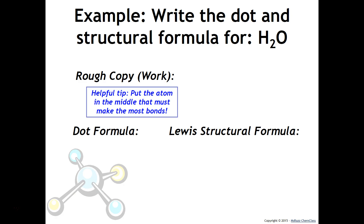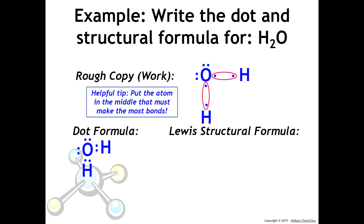This is water. A helpful tip: whenever you have three atoms of two different types, put the atom in the middle that wants to make the most bonds. Oxygen only needs to make two bonds and hydrogen needs to make one each, so oxygen goes in the middle with each hydrogen positioned around it. Oxygen makes two bonds — one to each hydrogen. The dot formula and structural formula both show this, with the only difference being that the dot formula uses two dots while the structural formula uses a single line.